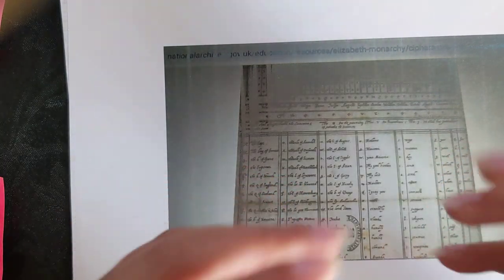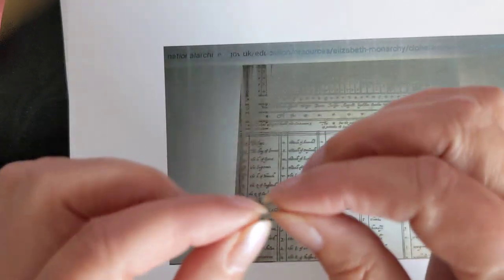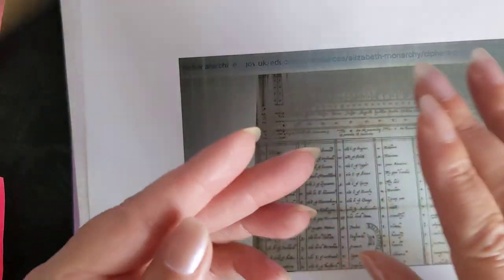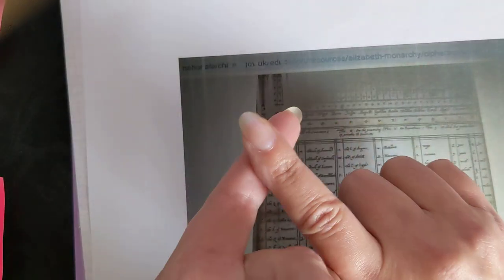Now I can actually turn the symbols from the Voynich manuscript into English letters. So what I'm going to do is I've got three more videos planned.